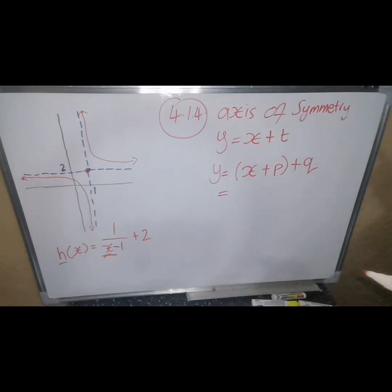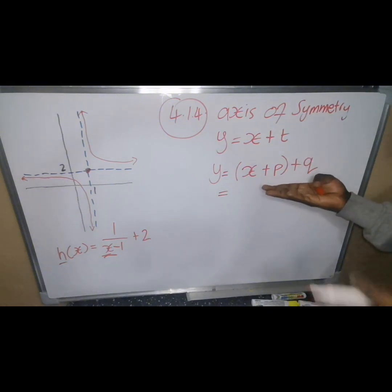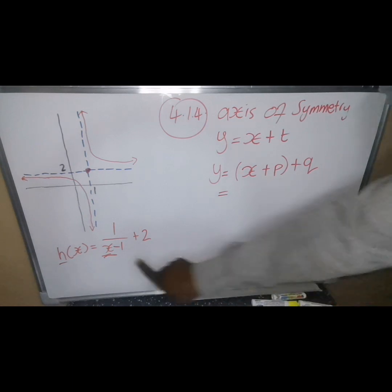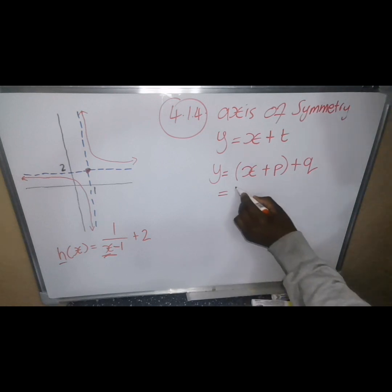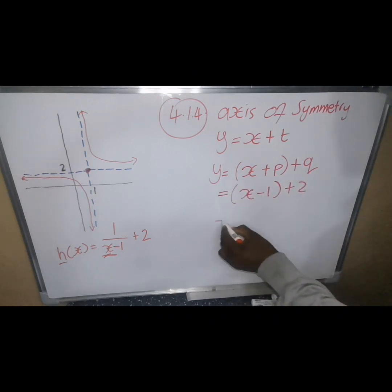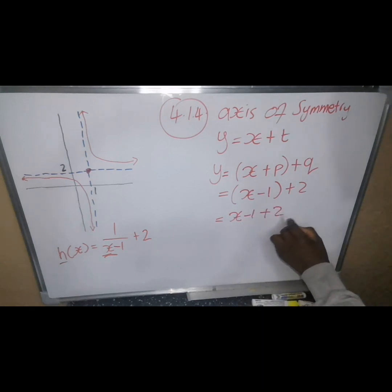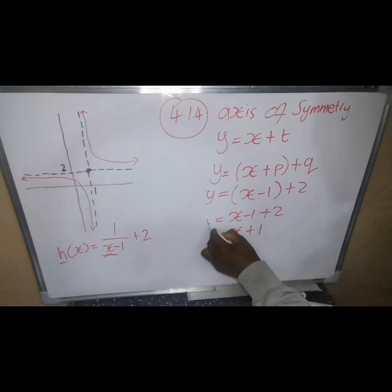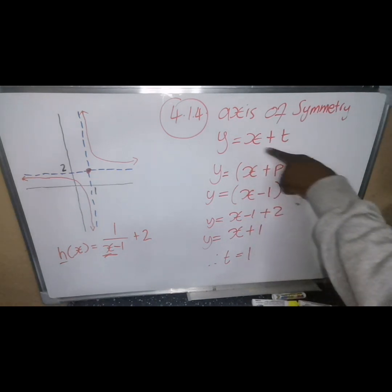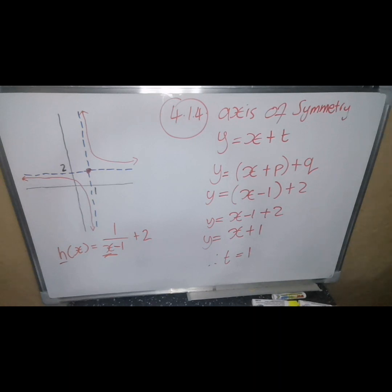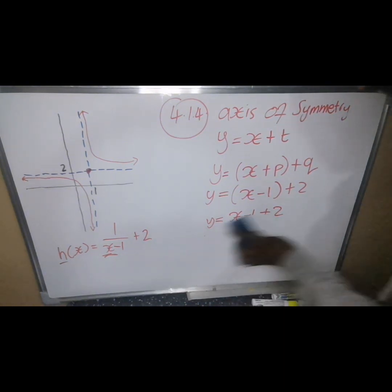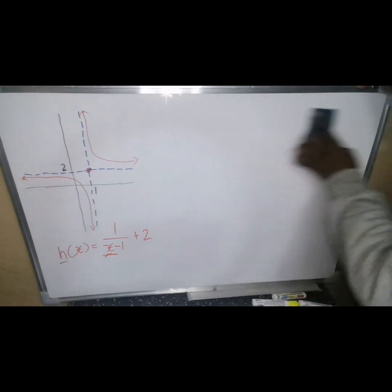The value of p is negative 1 and q is positive 2. Substituting: y = x + (−1) + 2 = x + 1. Therefore t equals 1. This is how you find t — comparing with y = x + t, we get t = 2 − 1 = 1. There are many ways to solve this, but this is one of the best approaches.